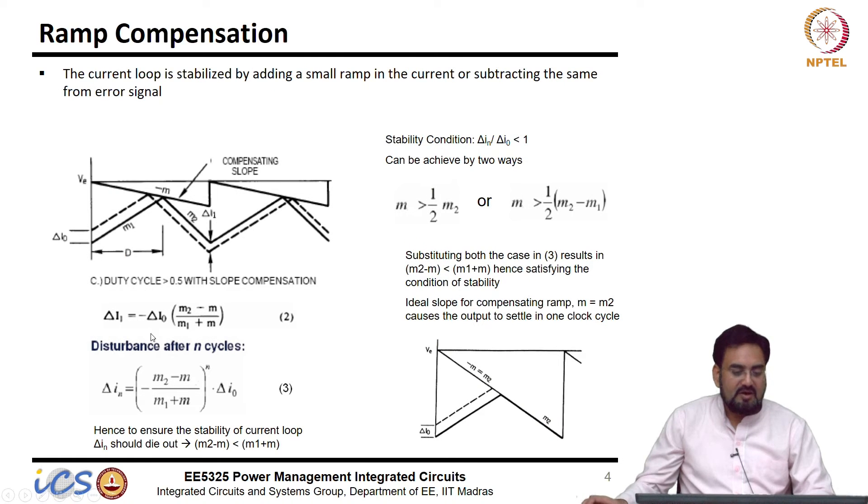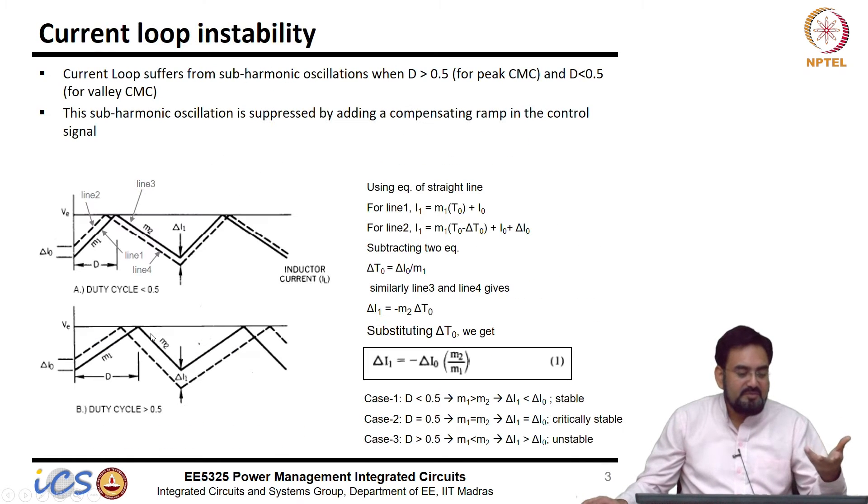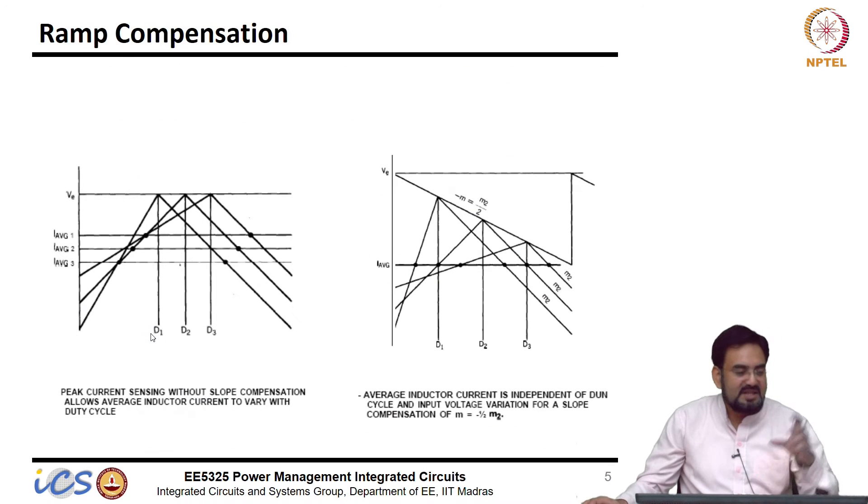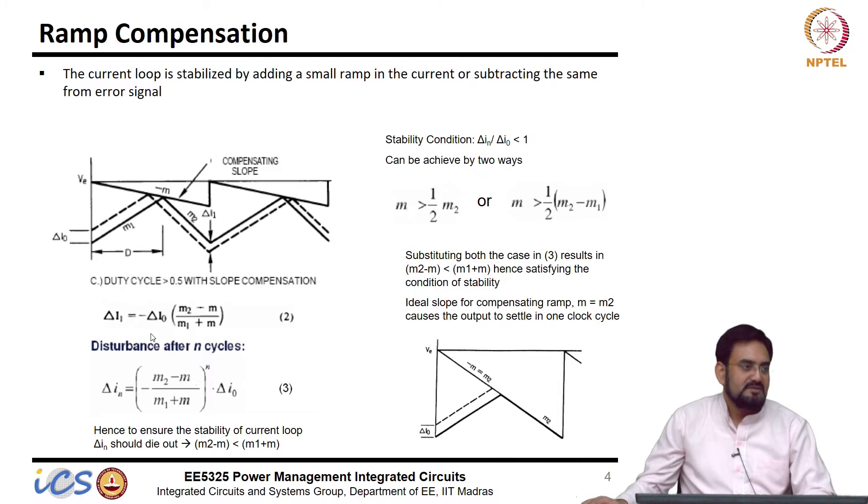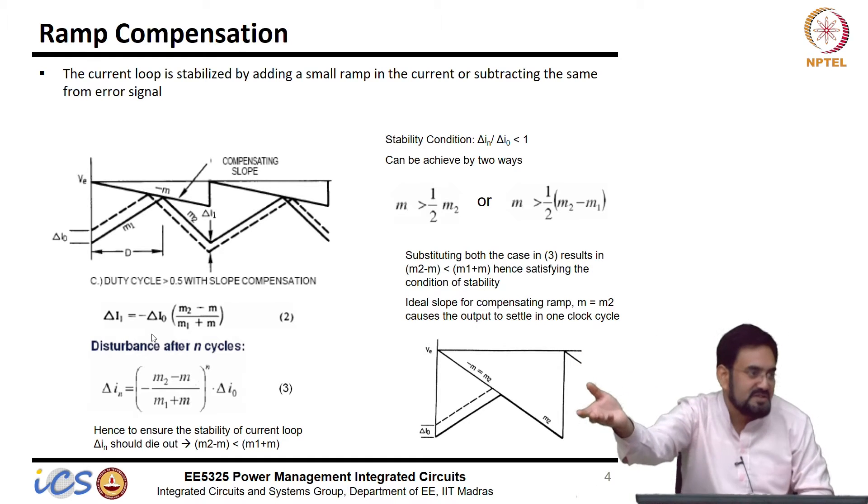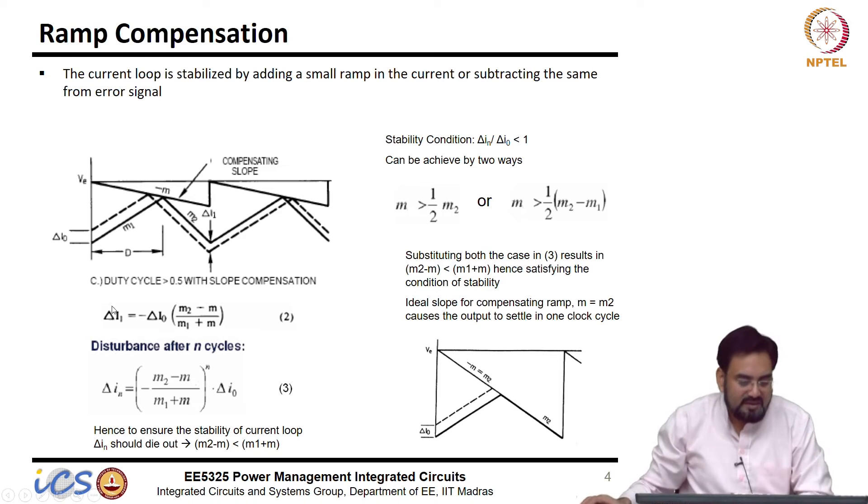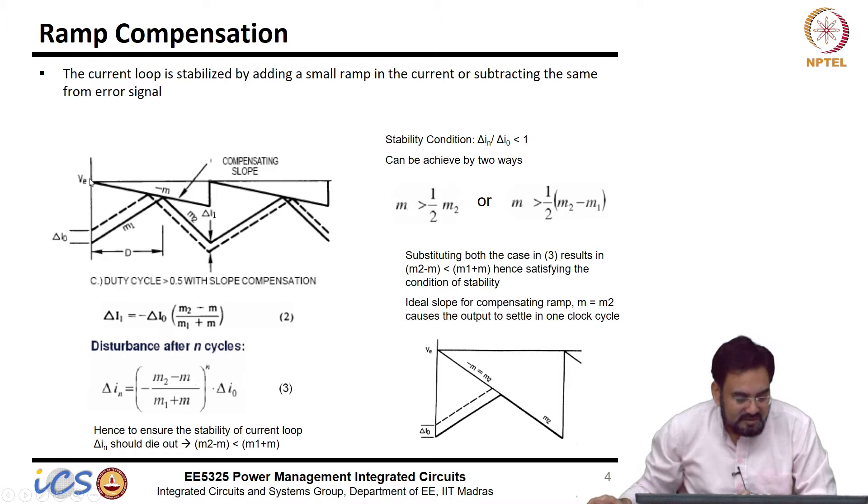So, an alternate way could be you can do in the sense current or you can add or subtract that slope from the control voltage itself. It is the same thing, ultimately two things are being compared. One is lying at the positive, other is at the negative. So, if you are adding at the negative you have to subtract from positive or other way around.